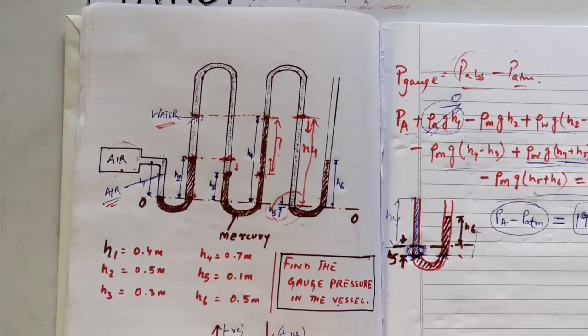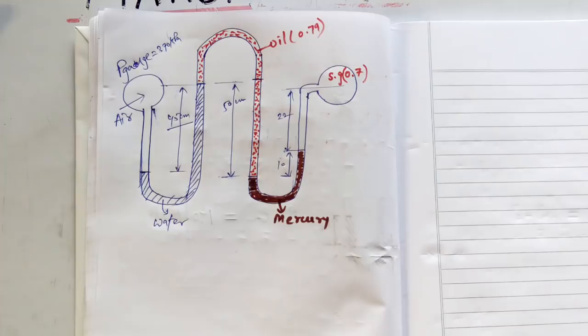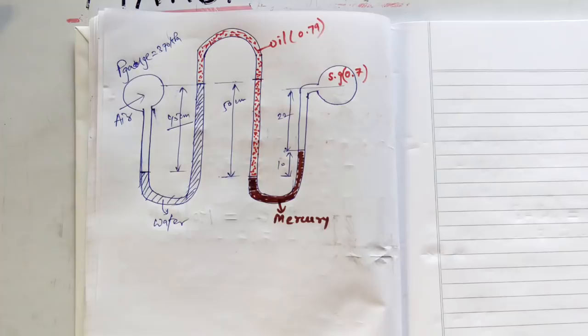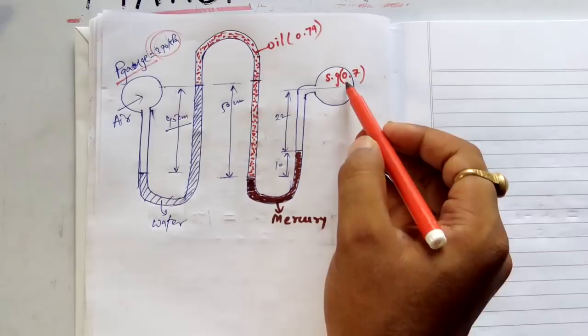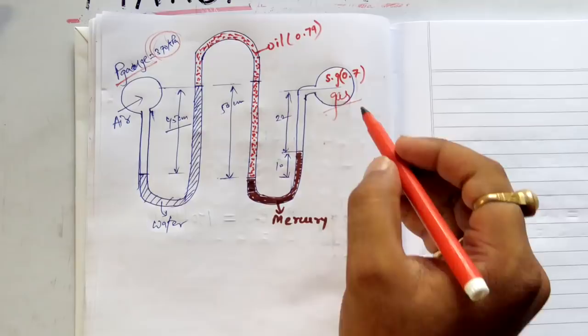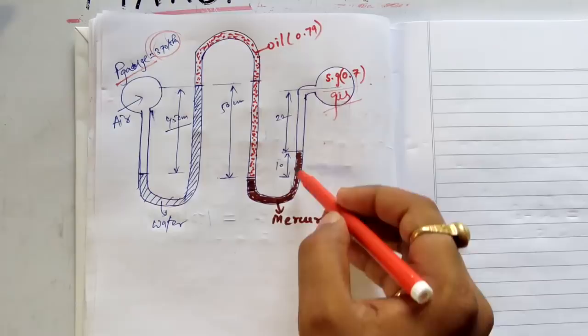This is the third problem. There is a vessel or pipe containing air showing a gauge pressure of 370 kilopascals. It also contains a gas and you need to find the pressure of this gas. The specific gravity is given, and this multi-tube manometer consists of manometric fluids: water, mercury, and an oil.